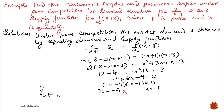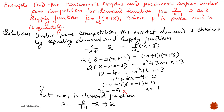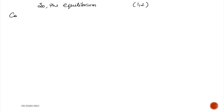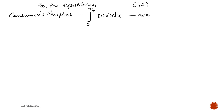Since x = −9 is not possible because quantity can never be negative, we use x = 1. Substituting x = 1 into the demand function gives p = 8/(1+1) − 2 = 2. So the equilibrium point is (x0, p0) = (1, 2). The consumer surplus equals integration from 0 to x0 of the demand function dx minus p0·x0.